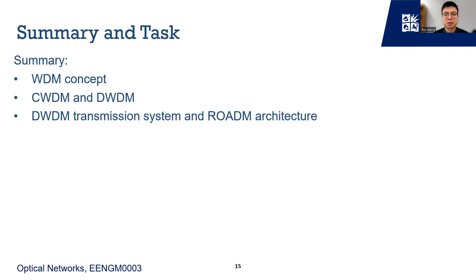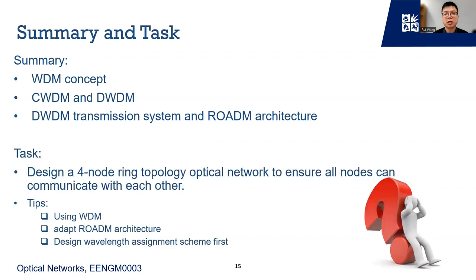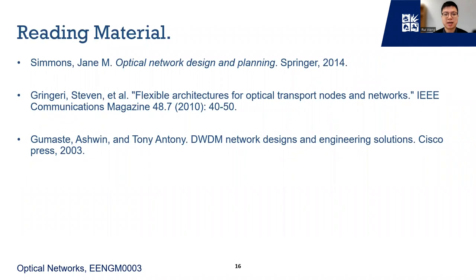To summarize, in this lecture we have seen what a WDM system is and discussed and compared CWDM and DWDM systems. We have also gone through a DWDM transmission system and ROADM to support switching, add, and drop functions in optical networks. Please consider a task: use what you have learned today to design a four-node ring topology optical network so that every node can communicate with each other. I have listed some tips for this task, and we will discuss it in our next lecture. Here are two books and a paper for further reading on WDM systems and ROADM architectural design. Thank you for your attention — I hope you enjoyed today's lecture, and have a nice day.